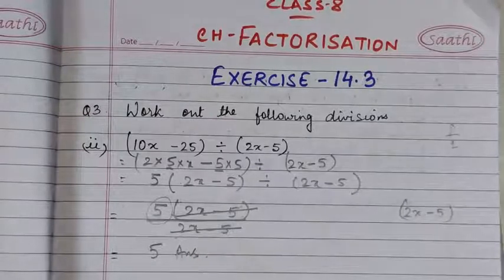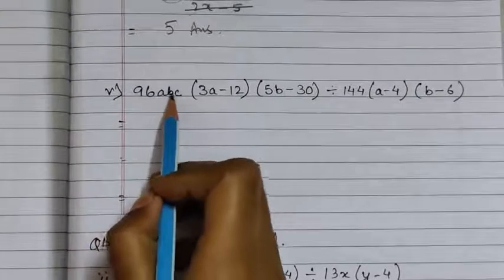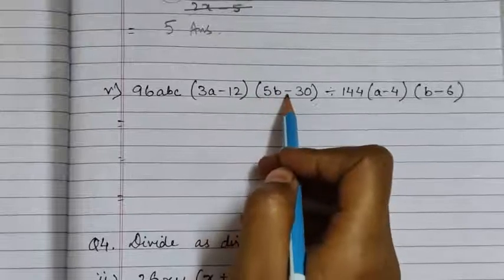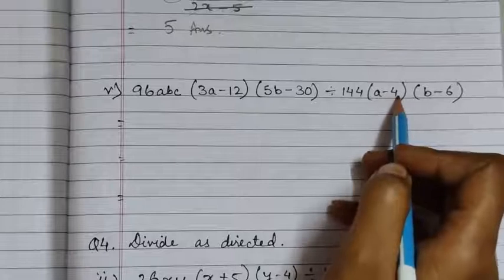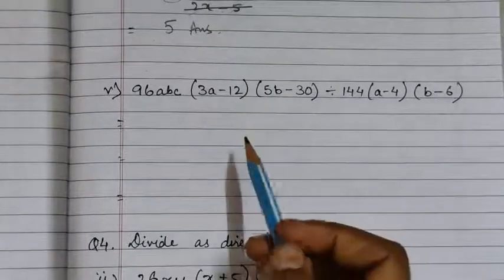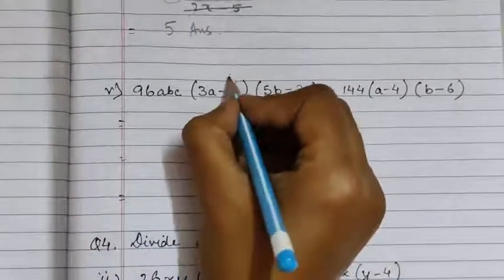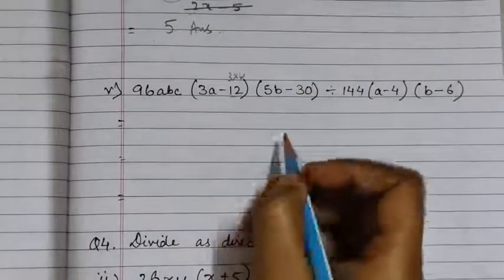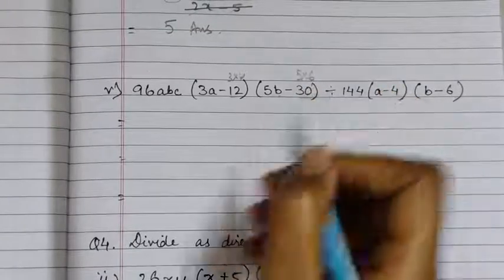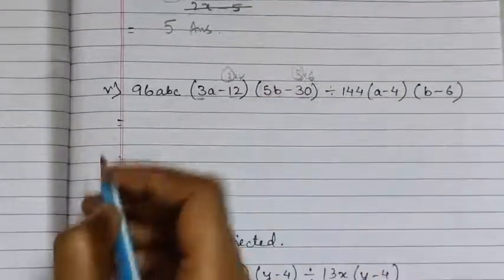Now let us see one more question — that is number 5. In number 5 we have 96abc into (3a minus 12) into (5b minus 30), divided by 144 into (a minus 4) into (b minus 6). Let us see if we can take any common factors out from these brackets. Now 12 can be written as 3 into 4, and 30 can be written as 5 into 6. So here we can take 3 common from the first bracket and 5 common from the second bracket.